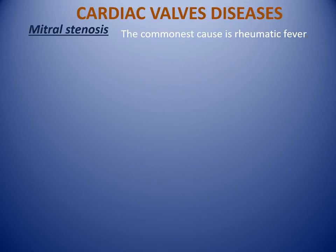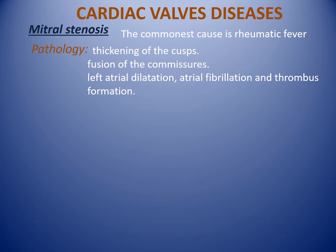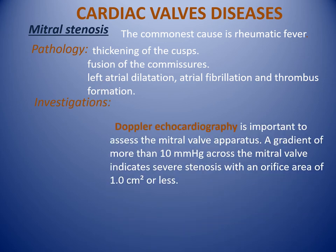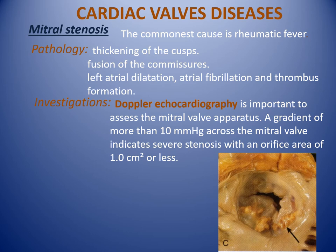Cardiac valve disease. Mitral stenosis: the most common cause is rheumatic fever. Pathology includes thickening of the cusps, fusion of commissures, left atrial dilatation, atrial fibrillation, and thrombus formation. Echocardiography is the most important investigation to assess the mitral valve apparatus. A gradient of more than 10 mmHg across the mitral valve indicates severe stenosis with an orifice area of 1 cm² or less.